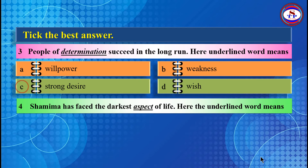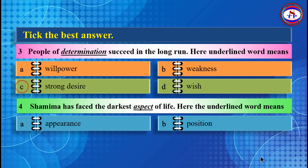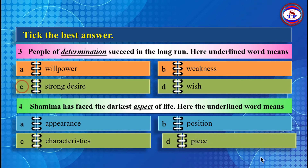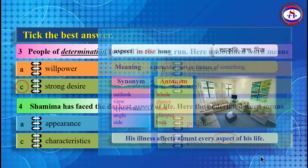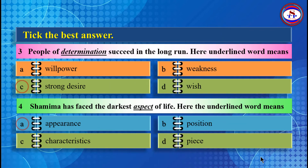Number 4: Shamima has faced the darkest aspect of life. The underlined word 'aspect' means — Option A: Appearance, Option B: Position, Option C: Characteristics, Option D: Peace. The best answer is Option A: Appearance.